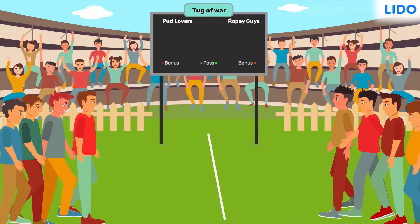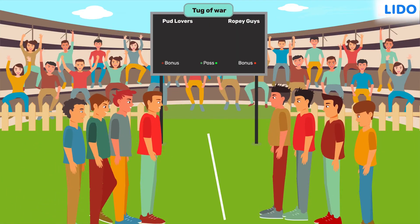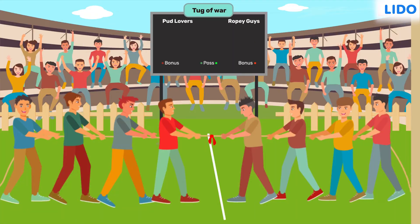The second match is between team Spud Lovers and Ropey Guys. Both teams seem equally prepared and strong. I wonder who will win. Look at that, it's a tie. Woohoo! Both the teams are in the next round.